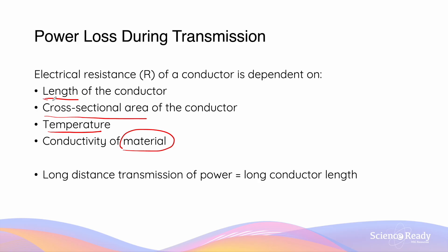We want to focus on the first factor — the length of the conductor — because, as we discussed earlier, most power stations are located in remote regions, quite far away from metropolitan areas which will receive the power. Long distance transmission of power is associated with a very long conductor length, which means the resistance of the transmission line is greatly increased due to the long distance it has to traverse.